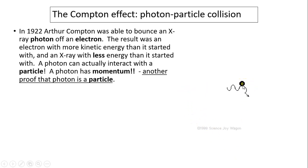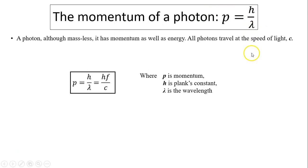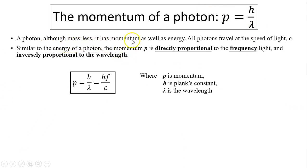Originally, this particle is at rest. Zero energy, zero momentum. After the collision, this particle gained energy and gained momentum. Now, what happens to the light? So, the light energy has to be less because its wavelength is longer and light momentum has to be less also. So, during a collision, both energy and momentum are conserved. So, the momentum of the photon, p equals h over lambda. So, a photon, although it doesn't have any mass, it has momentum as well as energy. All photons travel at the same speed, c. Similar to the energy of photon, momentum is also directly proportional to the frequency and inversely proportional to the wavelength. So, here is the equation. p equals h over lambda or h times f over c. In this equation, p is momentum, h is Planck's constant, and lambda is the wavelength.